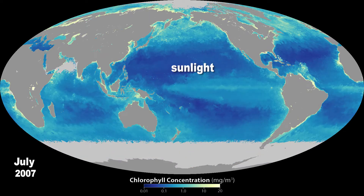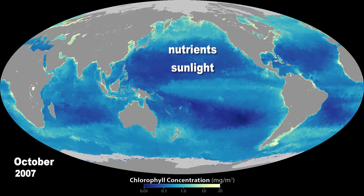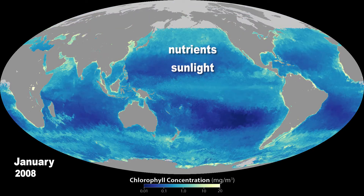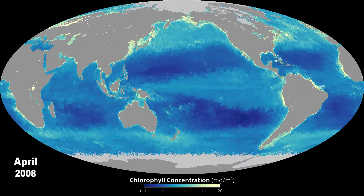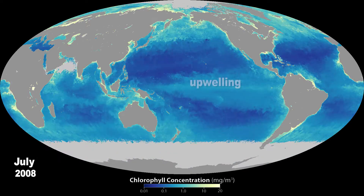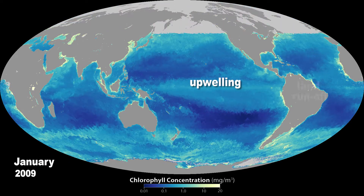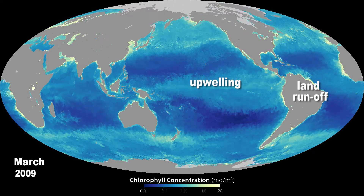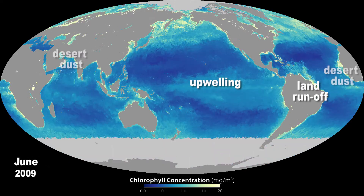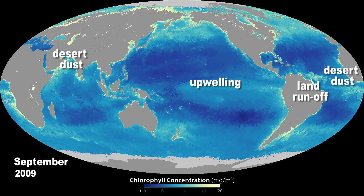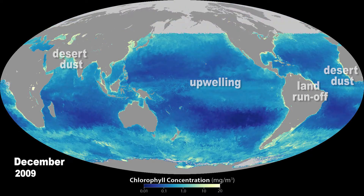In addition to sunlight, phytoplankton need nutrients to bloom. Much of these nutrients well up from the deep ocean, but some also run off from land or originate from desert sandstorms.